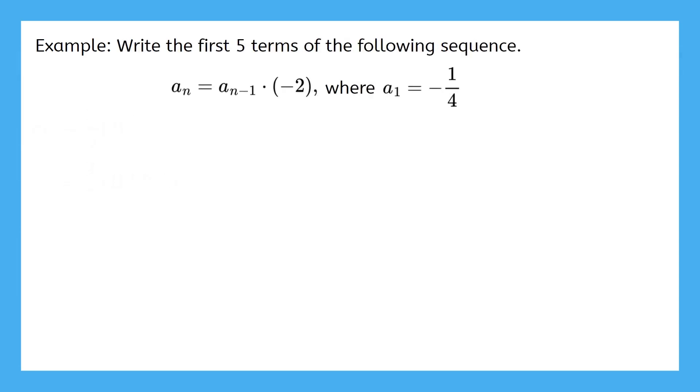Let's do an example involving the a sub n minus 1 notation. Write the first five terms of the following sequence. Remember, a sub n minus 1 represents the previous term. When it appears, you'll need to be given a starting term like this, a1. That is the first value in our sequence. So we should focus on a2. For a formula like this, you'll always find the next value by substituting in the previous value.